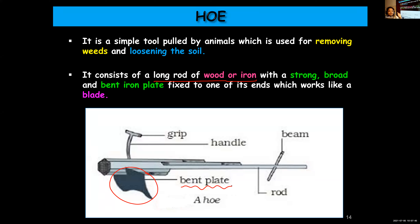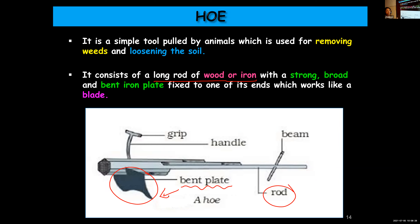The second device is hoe. Hoe is used for removing the weeds and also for loosening the soil. The main parts: it has a long rod of wood or iron, and at one end of this rod there is a strong, broad, bent iron plate which is very sharp — it works like a blade. When this bent plate moves through the soil, it helps in removing the weeds and also loosening the soil.